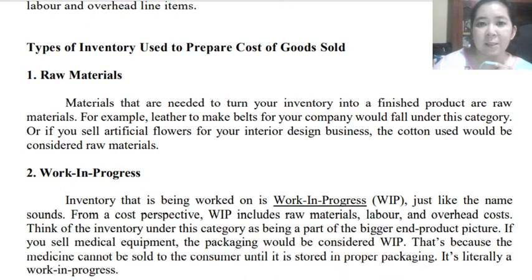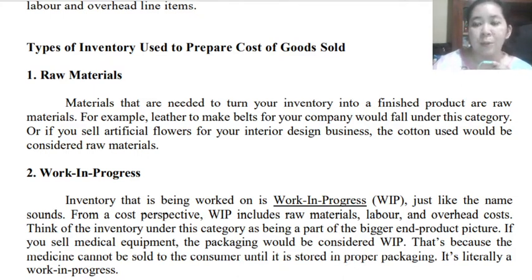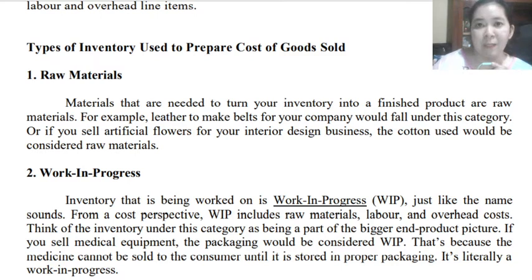For raw materials, these are the materials used in turning inventory into a finished good — what the entity uses to create or produce their product. For example, we have leather to make belts, or if you are making artificial flowers for an interior design business, the cotton used would be considered raw materials. These are the components being used for producing a product.